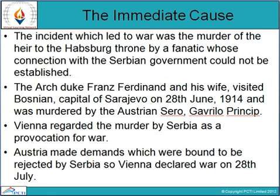The immediate cause of the war was the murder of the heir to the Habsburg throne by a fanatic whose connection with the Serbian government could not be established. The Archduke Franz Ferdinand and his wife visited the Bosnian capital of Sarajevo on 28th June 1914 and was murdered by Gavrilo Princip. Vienna regarded the murder as a provocation for war, and Austria made demands which were bound to be rejected by Serbia. Vienna declared war on 28th July.